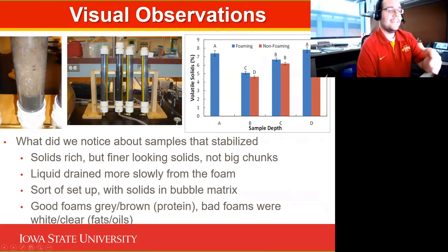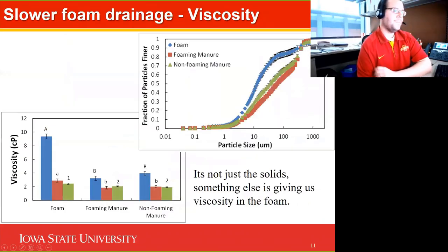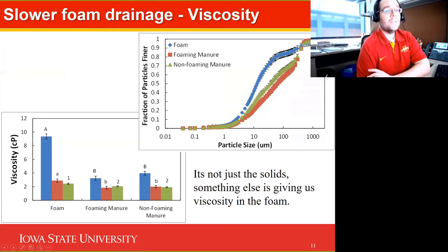He noted that how quickly water drained out of the bubble matrix mattered, and that a grayish-brown foam lasted longer while a clearish-white foam did not. Research literature indicates gray-brown foams tend to be protein-based while white foams tend to be fat-based. On particle size analysis using laser diffraction, the foam showed a very different particle size distribution — particles about 2 to 50 microns were much more concentrated in the foam than in the manures. Interestingly, the foaming manure itself was depleted in particles of that size relative to non-foaming manure.